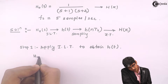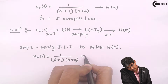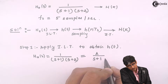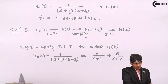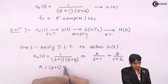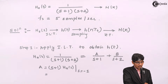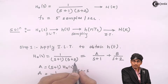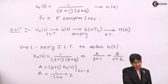We have H_A(S) = 1 / ((S+1)(S+2)). Let us apply partial fraction expansion: we get A/(S+1) + B/(S+2). To find A: A = (S+1) · H_A(S) evaluated at S = -1, which gives 1/(S+2) at S = -1, so A = 1/(-1+2) = 1.